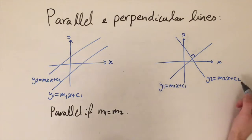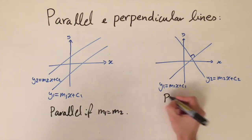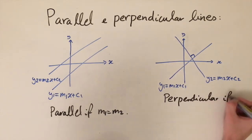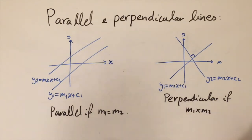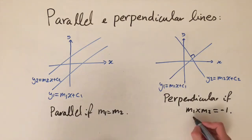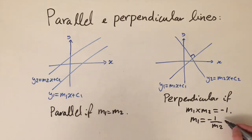For perpendicular lines, the condition is not as obvious. It still involves their gradients, and it's actually quite a surprising result: two lines are perpendicular if and only if the product of their gradients m1 times m2 equals minus one. We can rearrange this and write it as m1 equals minus one divided by m2.